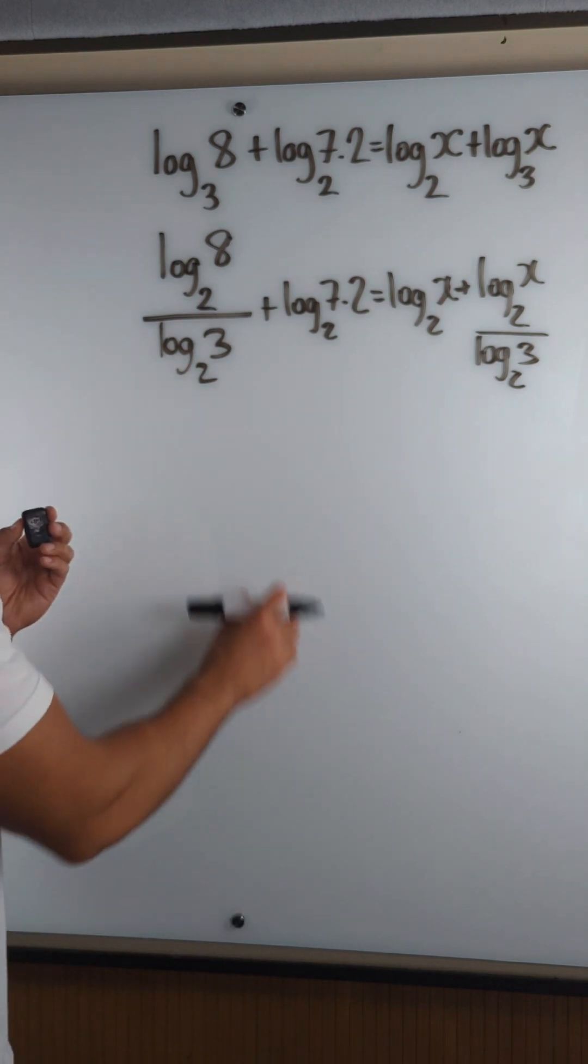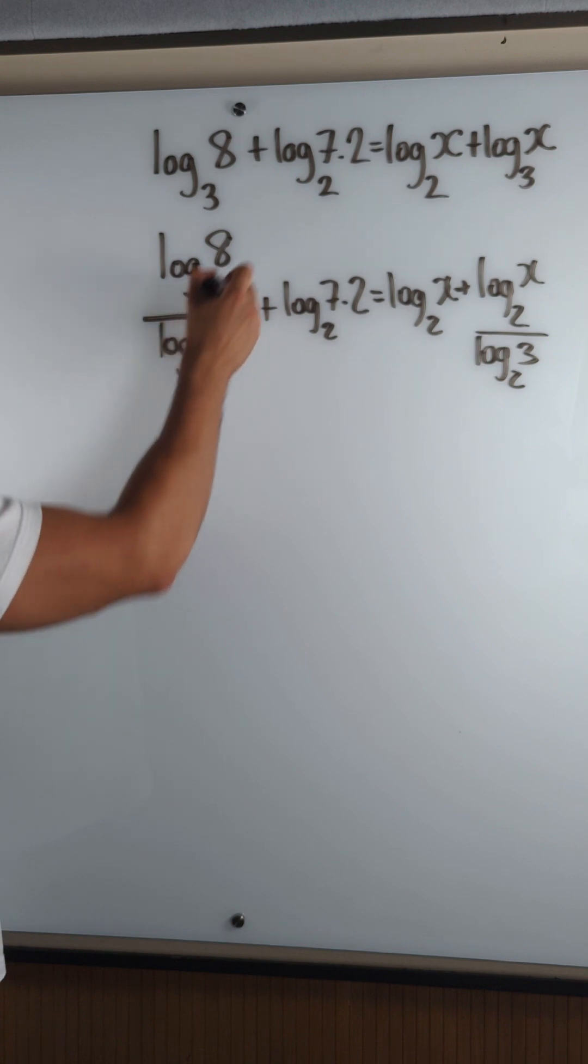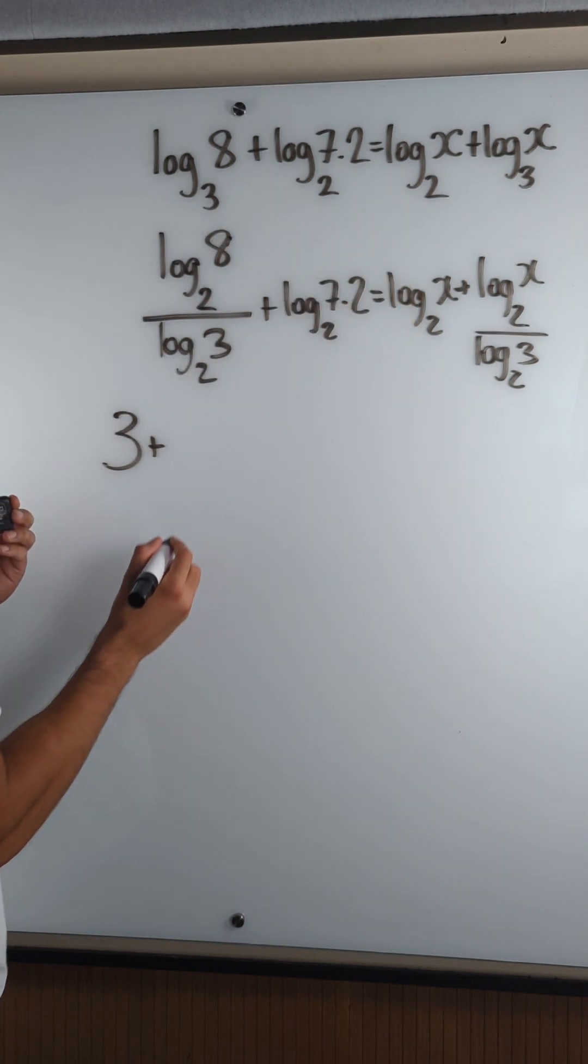Now the next thing I'm going to do is I'm going to get rid of all of these denominators. So, and also this is 3, right? So 3 plus timesing through by log base 2 of 3.